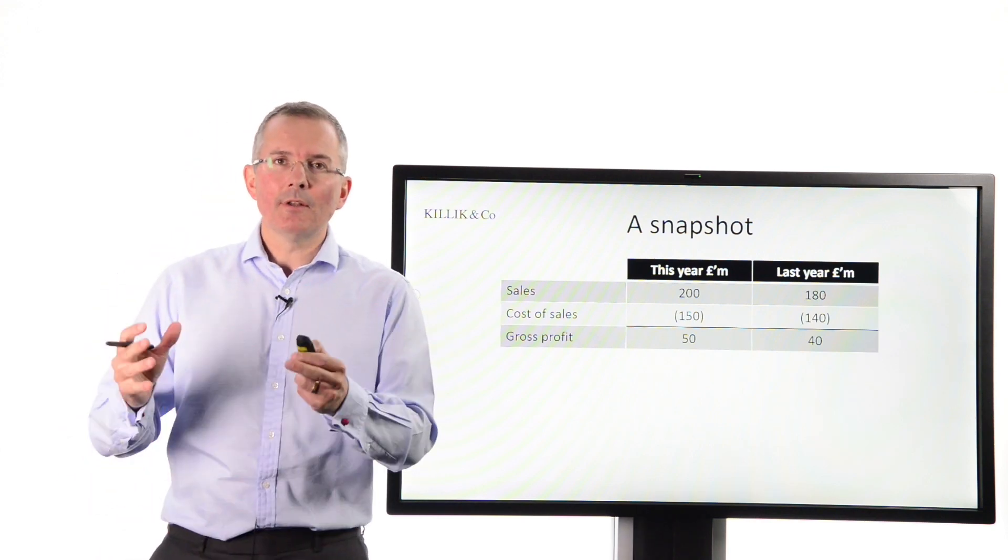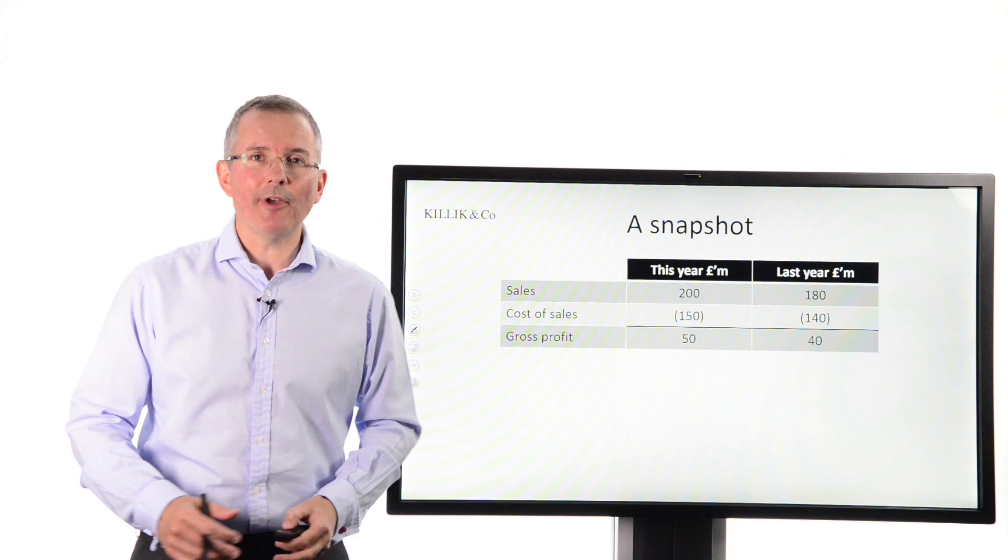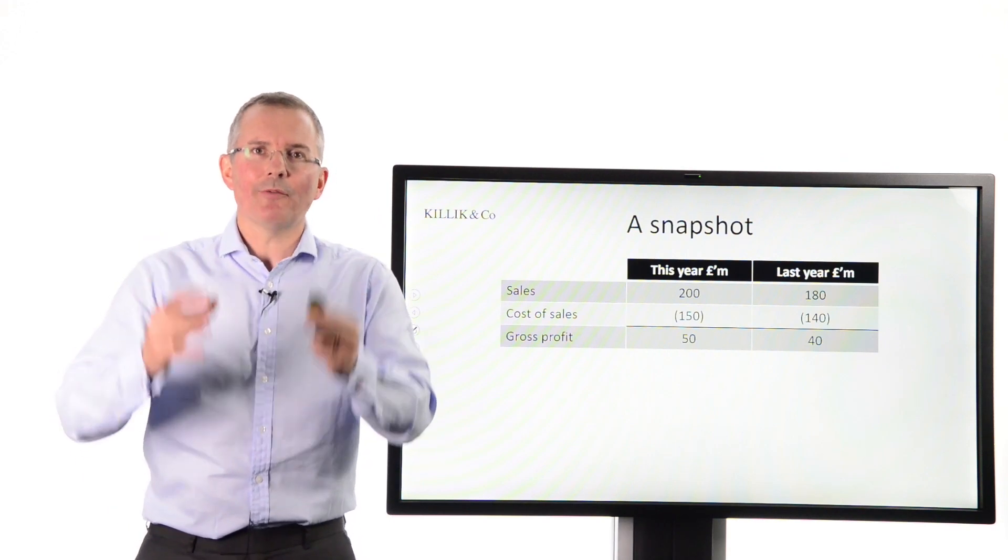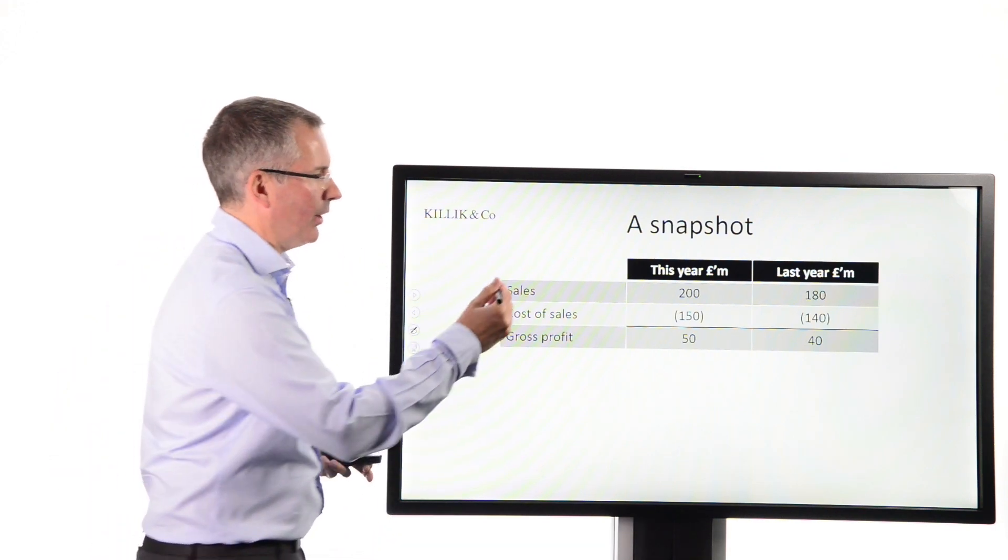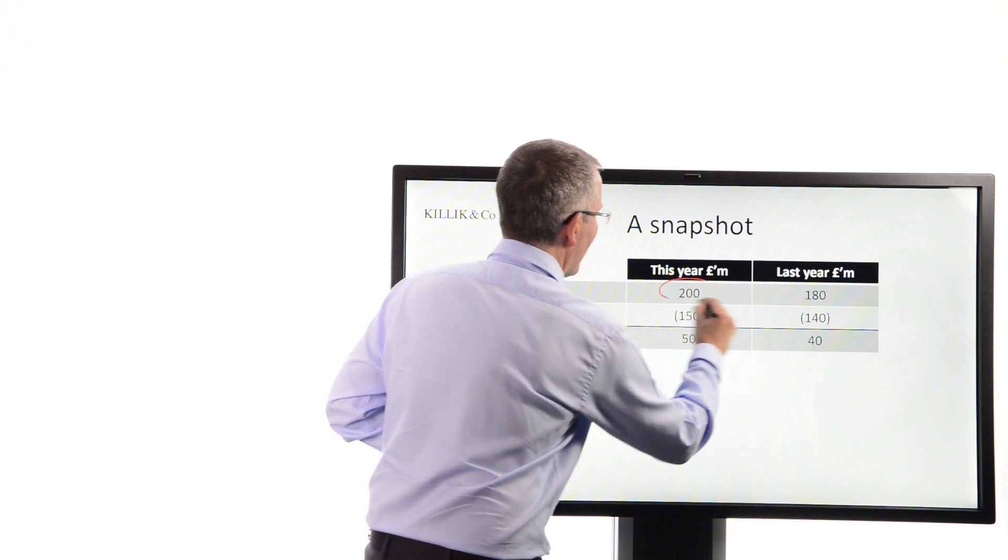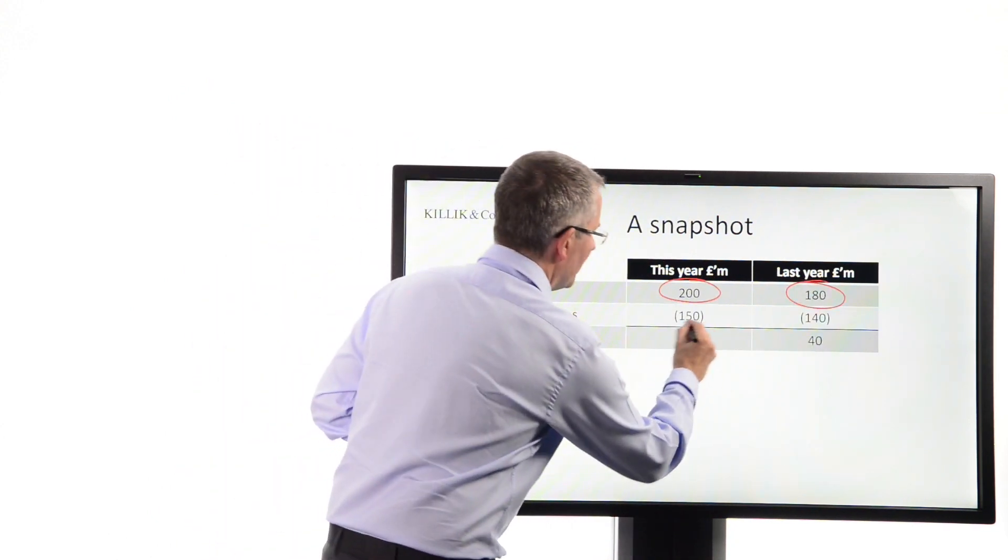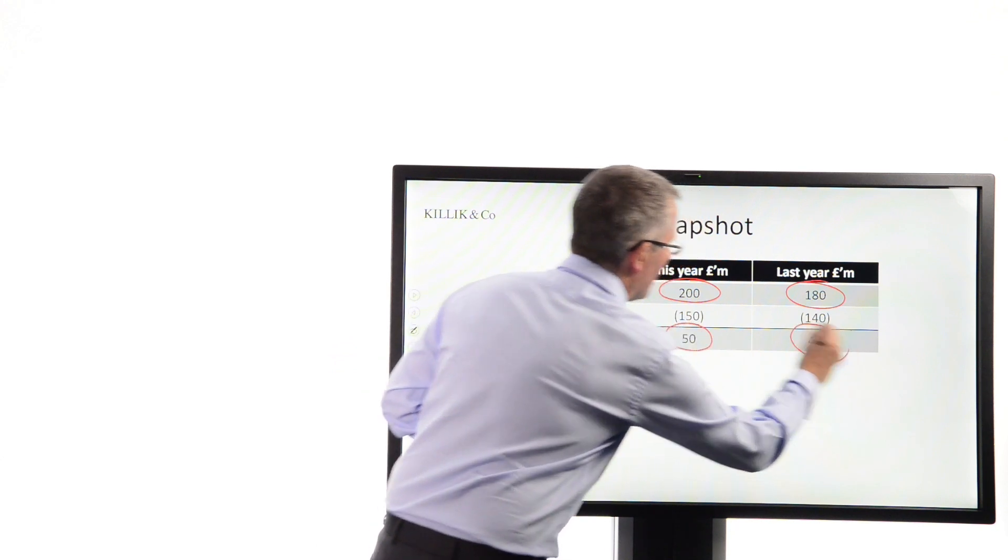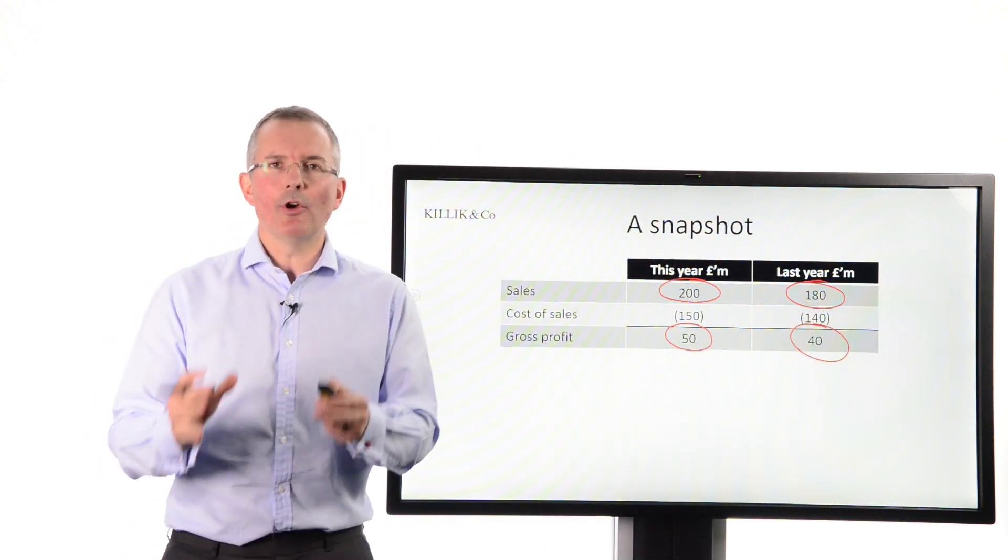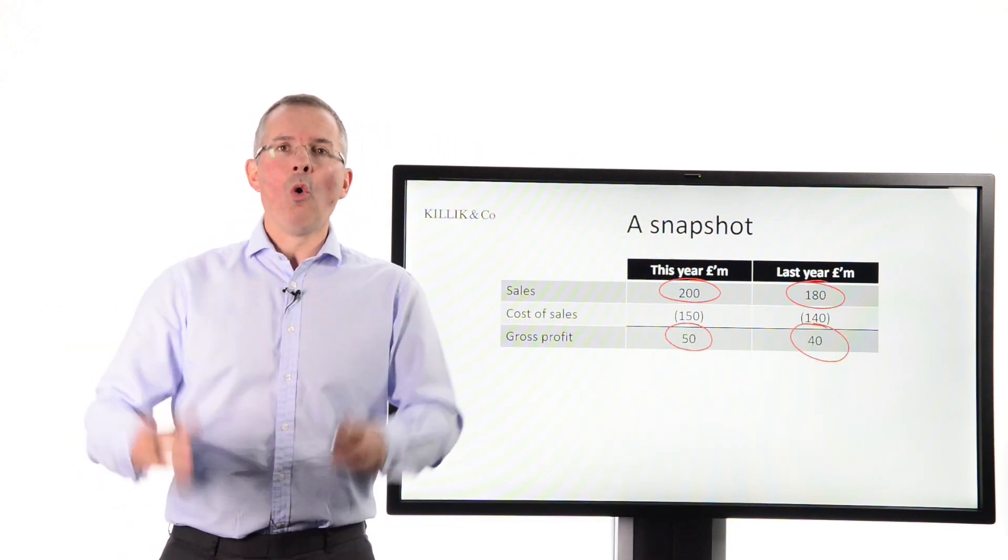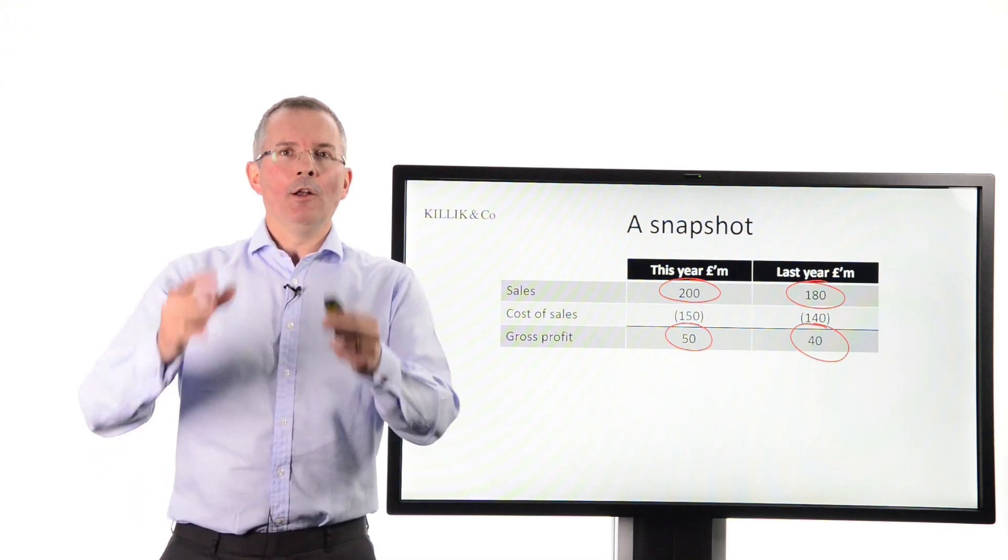Cost of sales deducted to give gross profit. Now, if you just looked at that snapshot of a profit and loss account, you'd think, well, this is looking all right. Two key numbers heading in the right direction. There's one of them, the sales figure, and there's the other one, a nice climb in the gross profit figure. So all looking well. Not so fast.